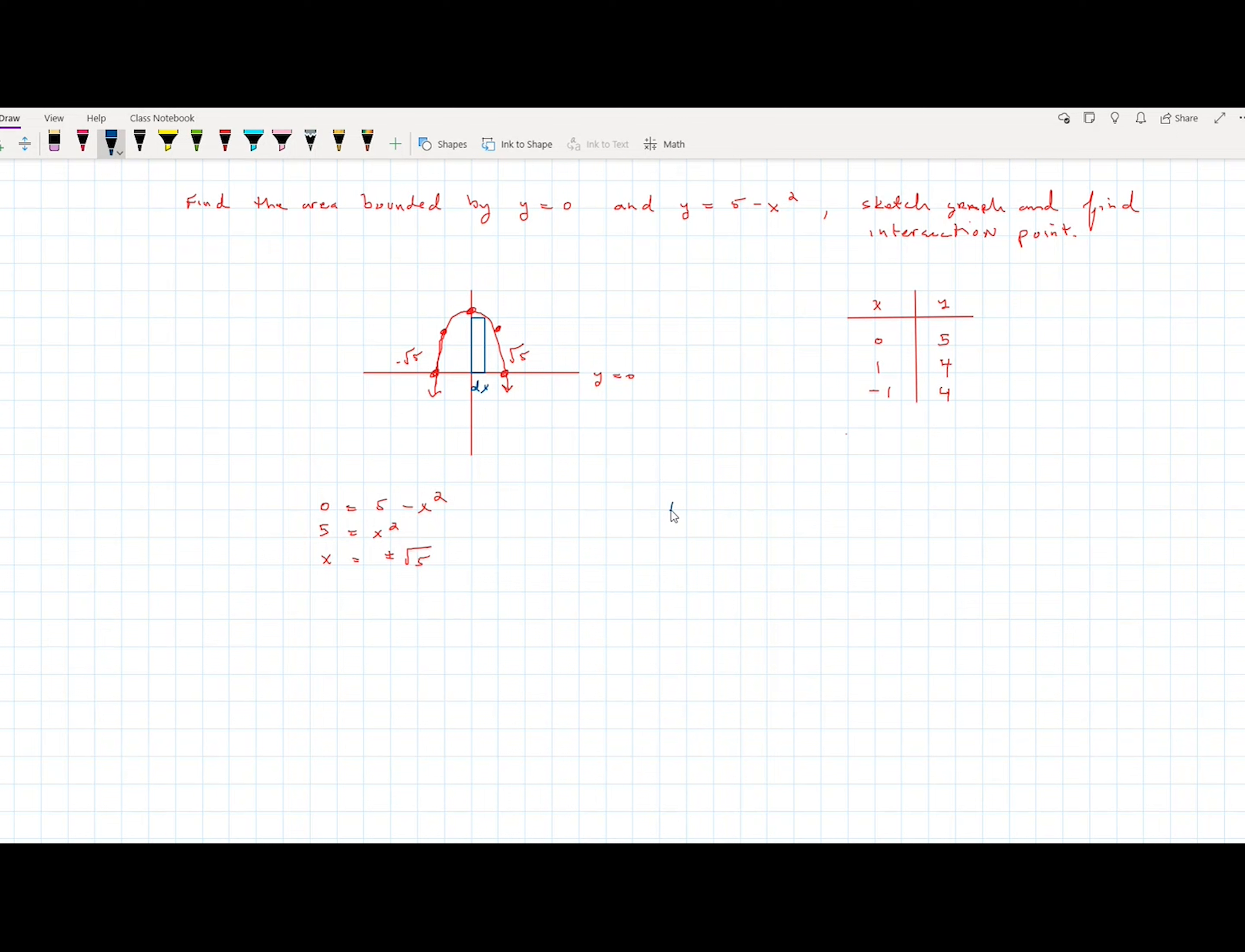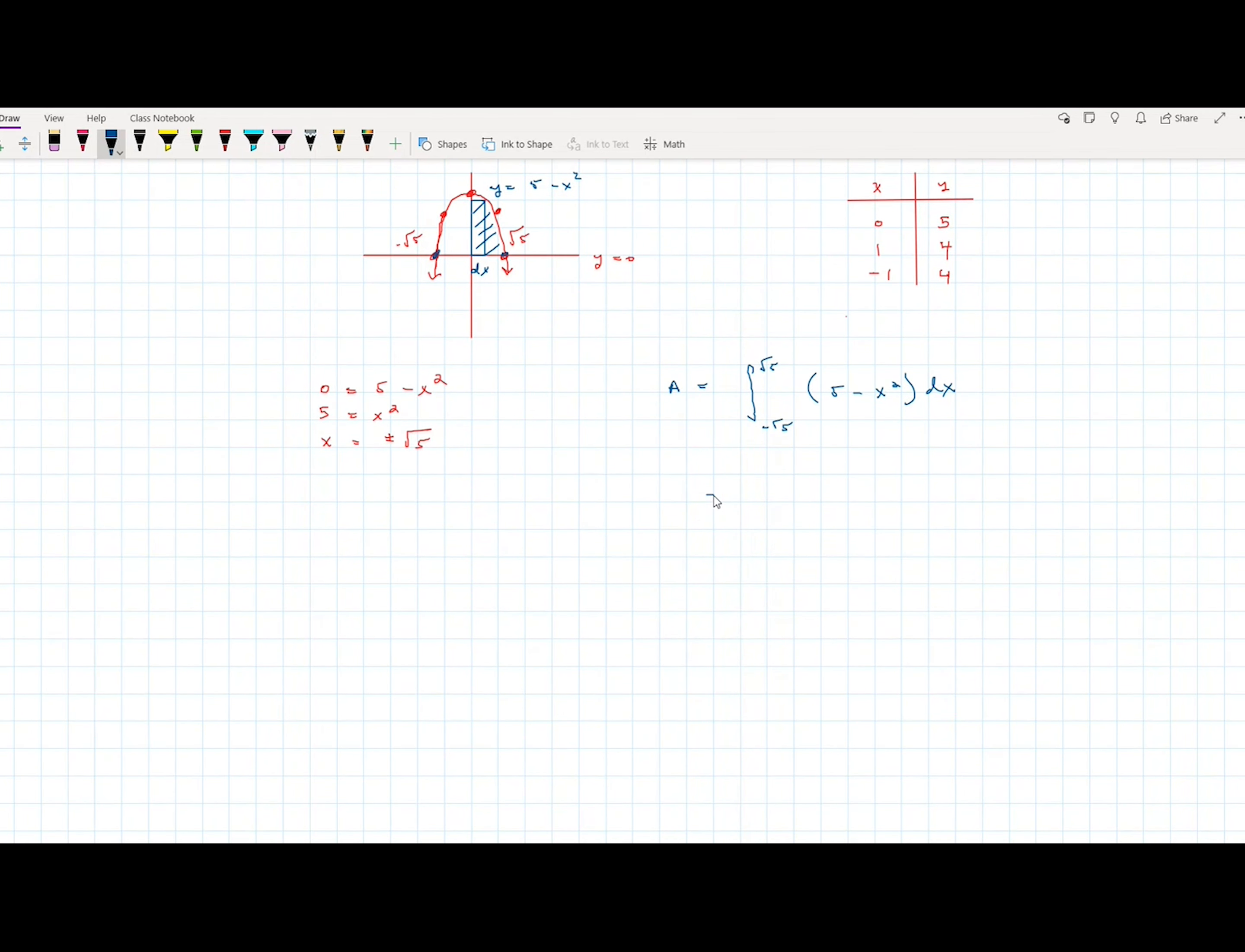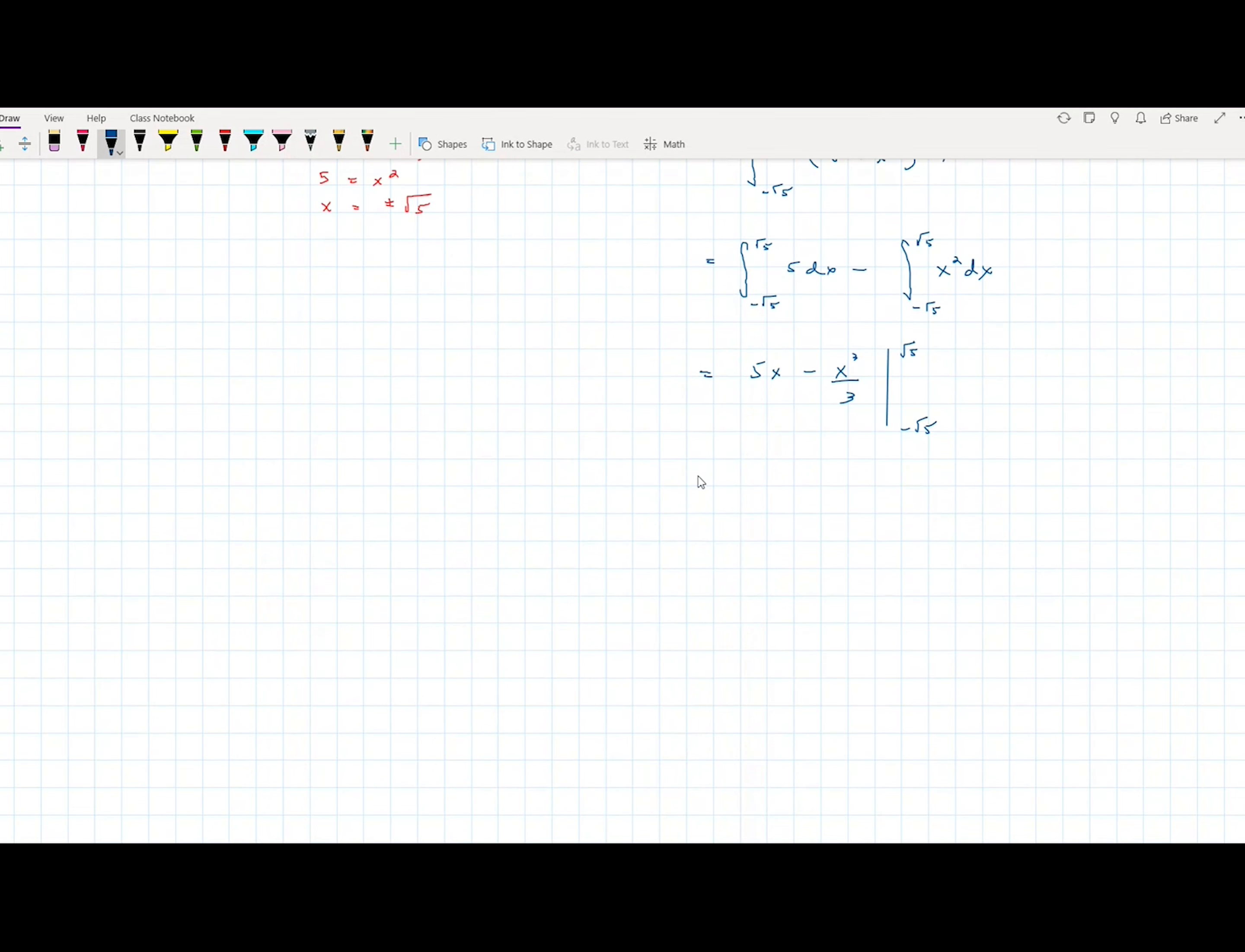So the area under this curve. Square root 5 to negative square root 5. And my function, right? I'm looking for the area under y equals 5 minus x squared. Now these are easy integrals to take. And then hopefully we get the same answer.